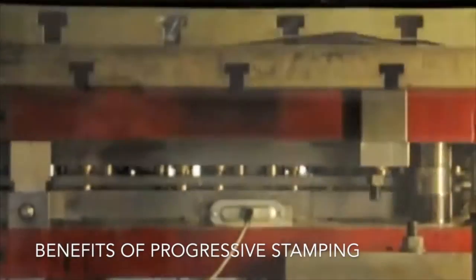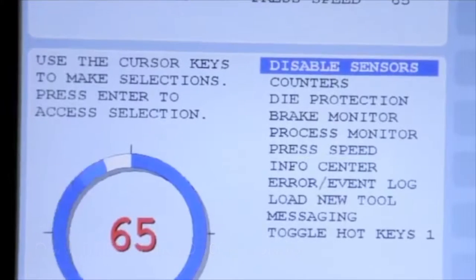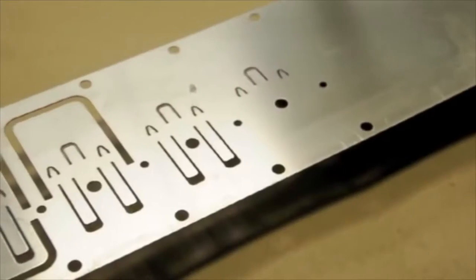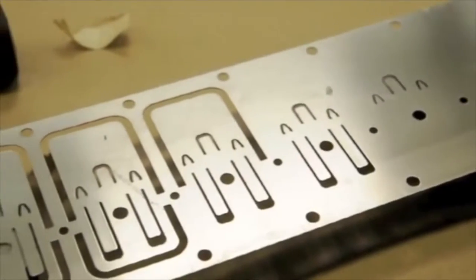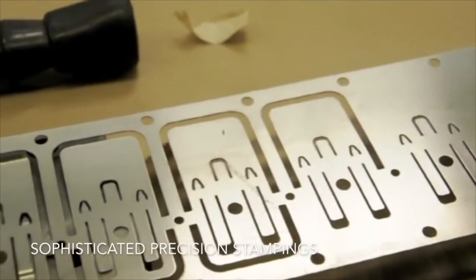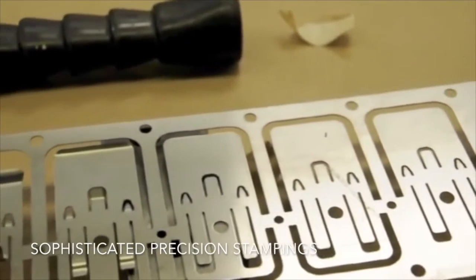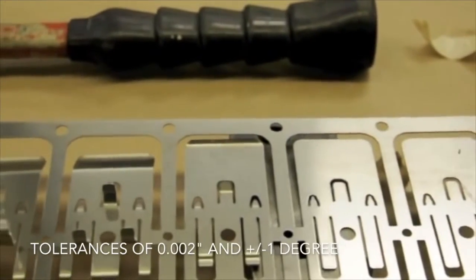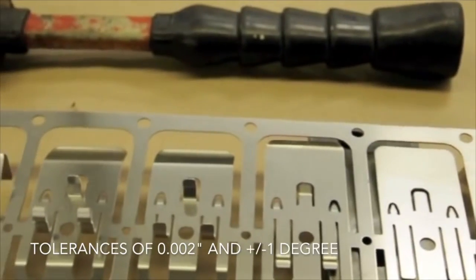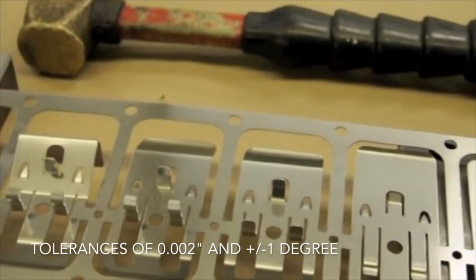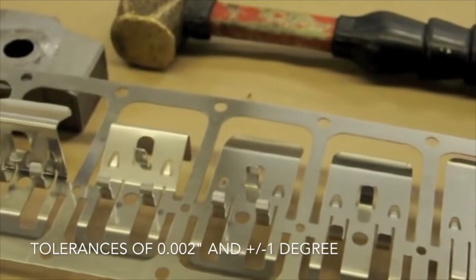There are many benefits to progressive stamping. It's a fast and cost effective solution for manufacturing large quantities of complex products. The process is well suited for higher volumes, reaching up to 100 million parts because the per piece setup and labor costs drop as production levels increase. Complex products and innovative designs can be created using sophisticated precision stampings. Benefits include very tight tolerances of around two thousandths of an inch for piercing operations and an angular tolerance of one degree for bending operations.